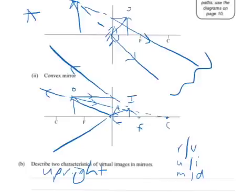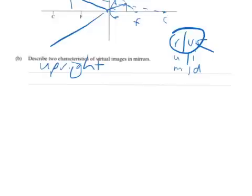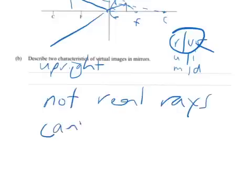And what I would say is that your real virtual, as we're focused on, they want you to describe something to do with virtual images a little bit more. So you might say they're not made with real light rays, not real rays forming them, and they can't be projected on an image, project an image on a screen.